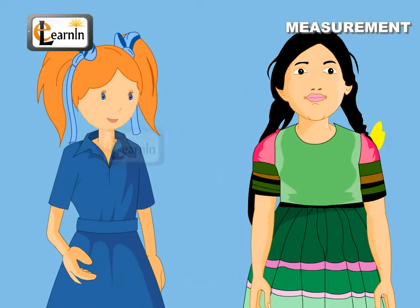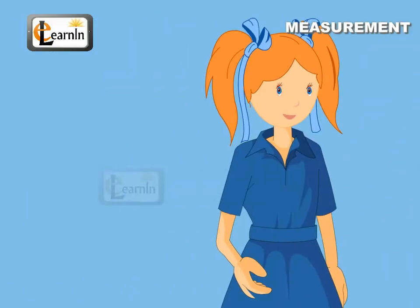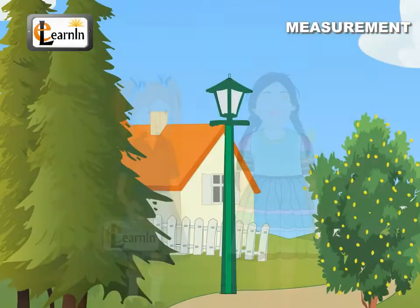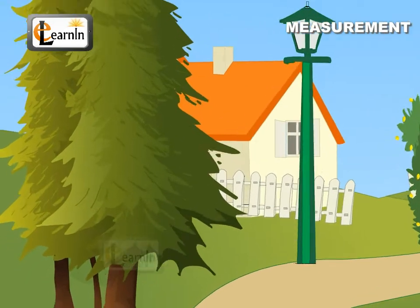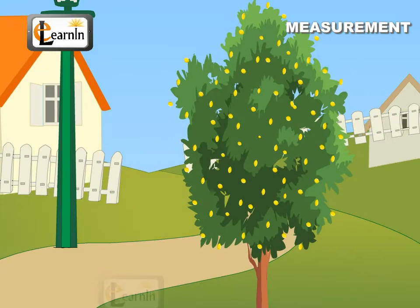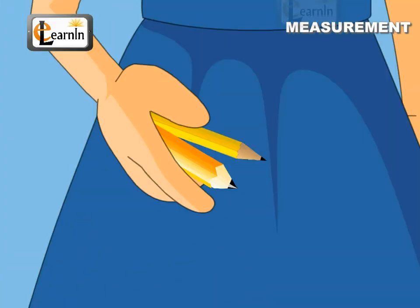Lena and Tina are best friends. Lena is fat and Tina is thin, so Lena is fatter than Tina. In Lena's garden, there is a pine tree which is tall and a short lemon tree, so the pine tree is taller than the lemon tree. Tina has two pencils — while one is thick, the other is thin.